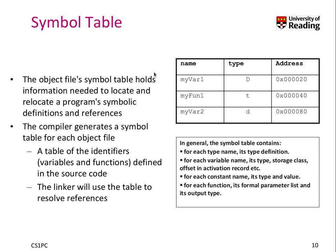Note that internally the compiler keeps different types of symbol tables, which are needed to build up local variable information too. It looks slightly different, but for the sake of discussion we can assume that's how the symbol table looks, even for local variables. When you encounter a function, you need to remember the formal parameter list and the output type — basically the signature — because the compiler then checks if the function is used in a way that matches the declaration, otherwise it issues a warning or an error.